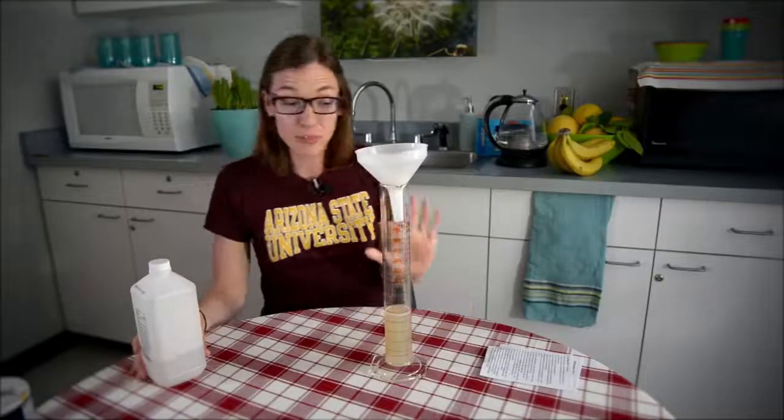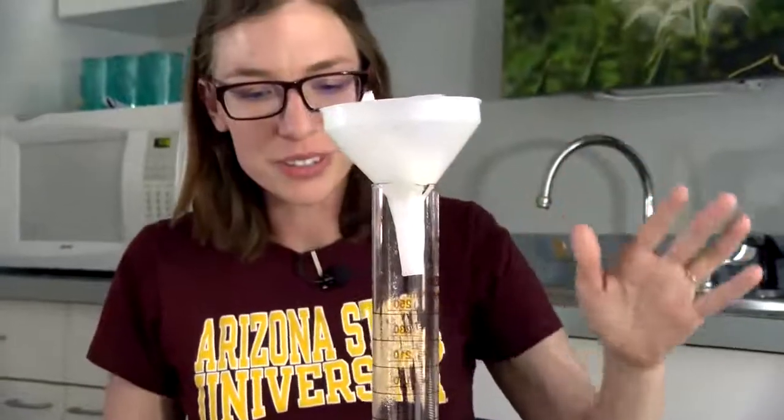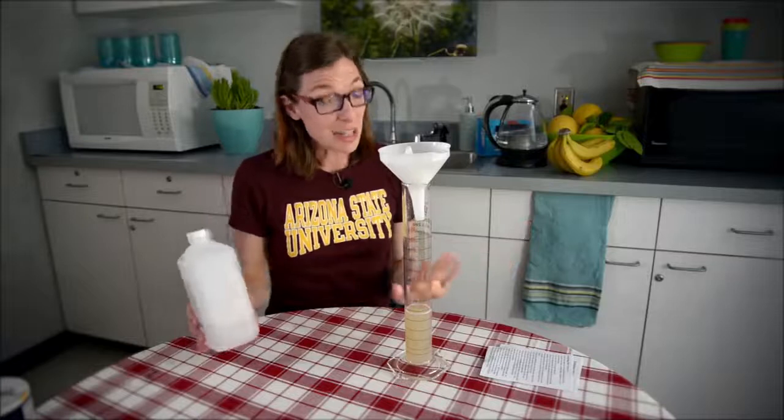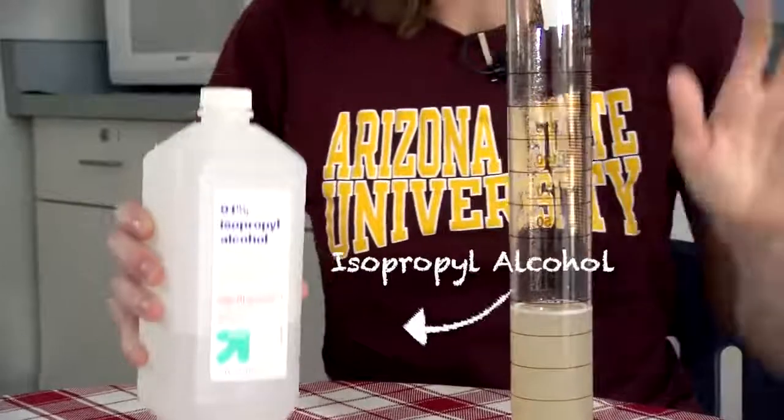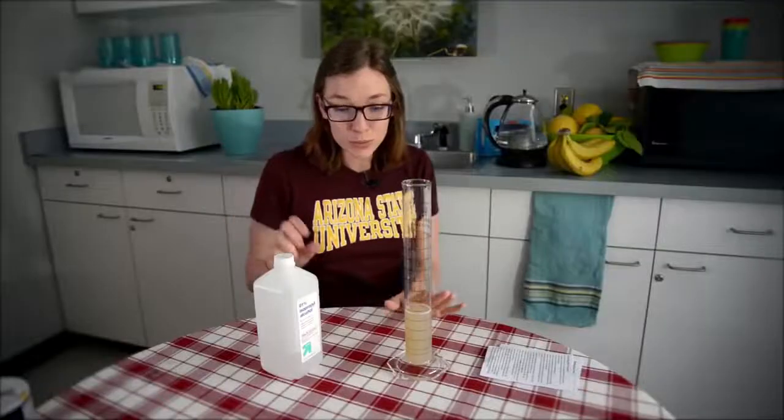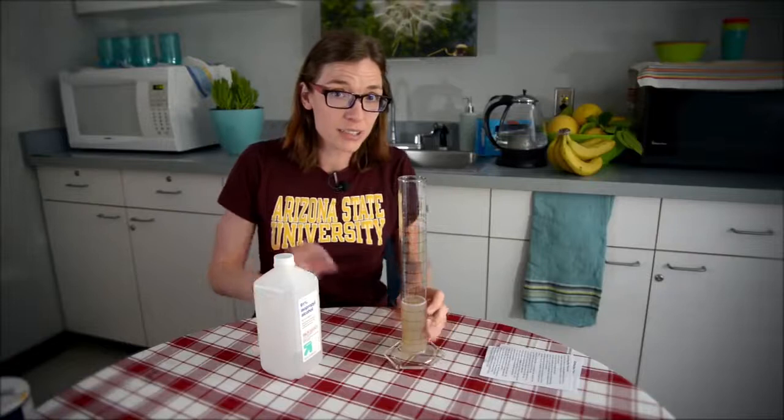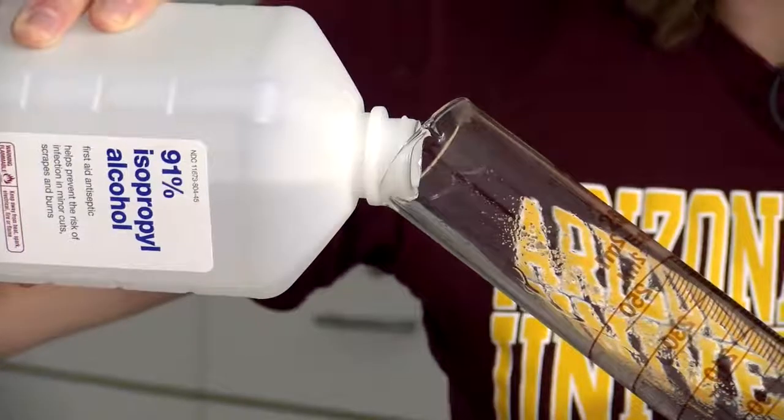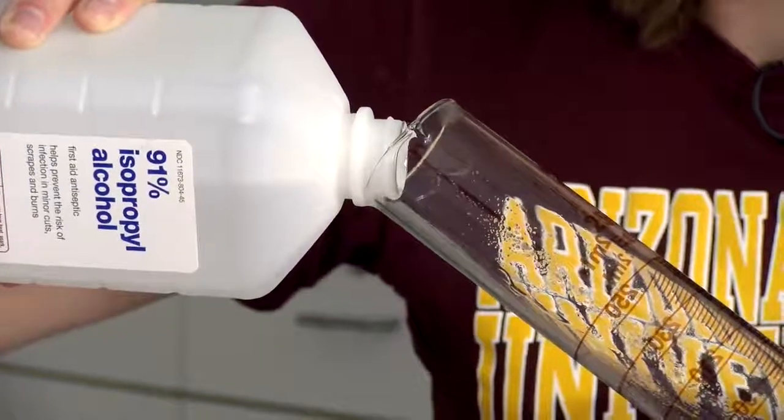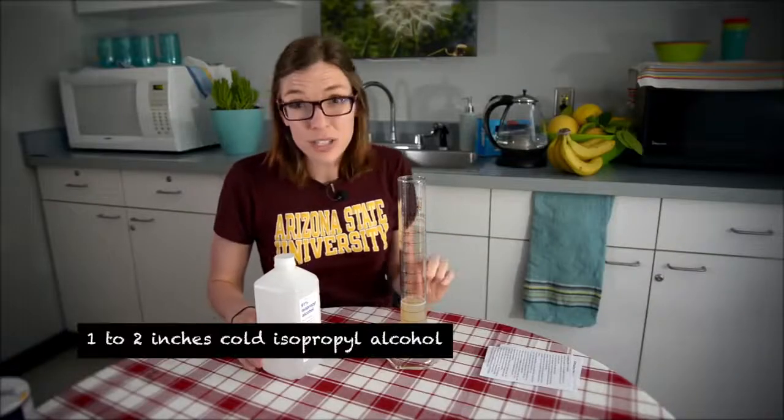So now that we've patiently waited for all our banana-mush mixture to go through our filter, we have the last and most exciting step, which is adding our isopropyl alcohol. We want to really try to keep the alcohol separate from this mixture because the DNA is going to precipitate or come out into the alcohol mixture. And we'll try to add two and a half to five centimeters or one to two inches to it.